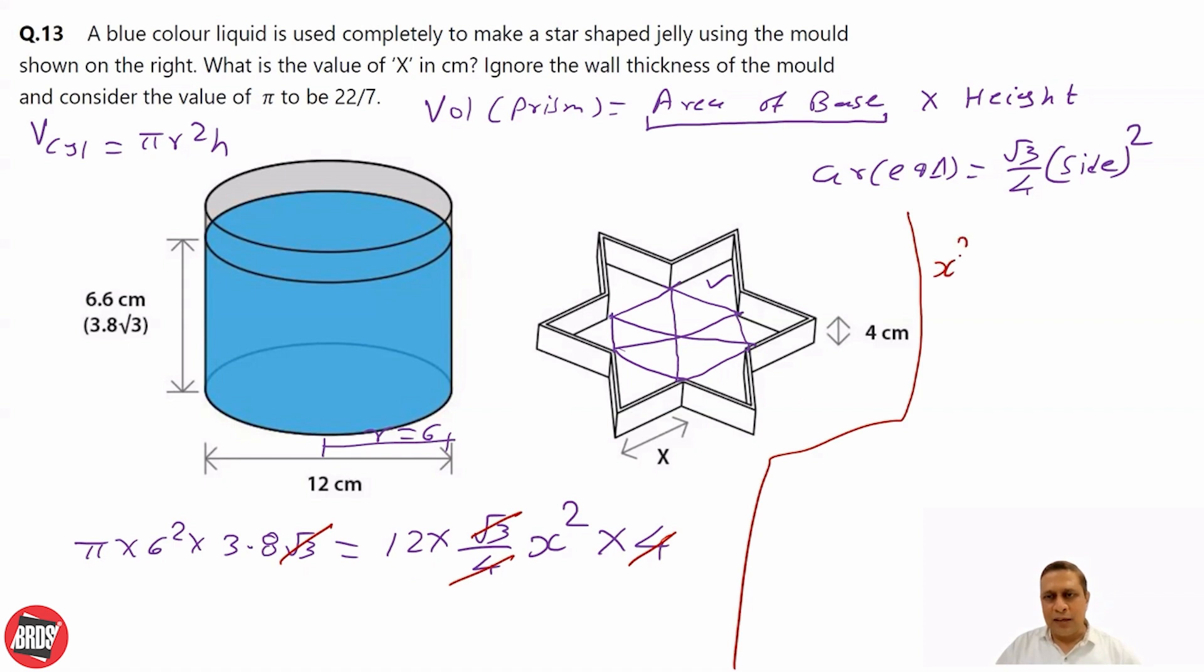X square is equal to pi that is 3.14 times 6 into 6 times 3.8 divided by 12. 6 twos are 12. What you get is 3.14 times 3 times 3 times 3.8.